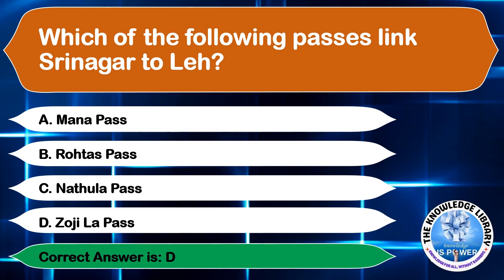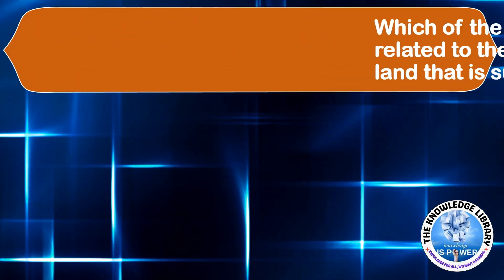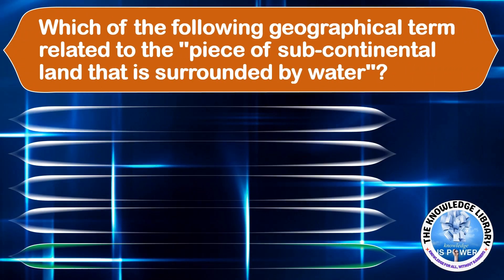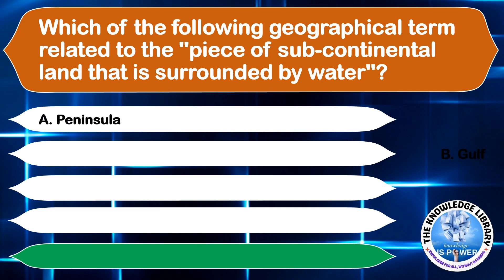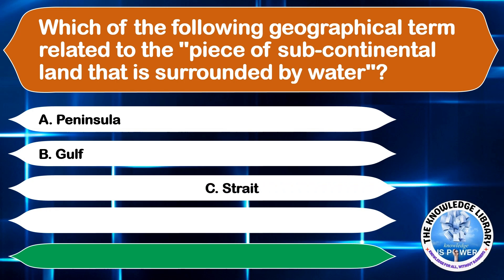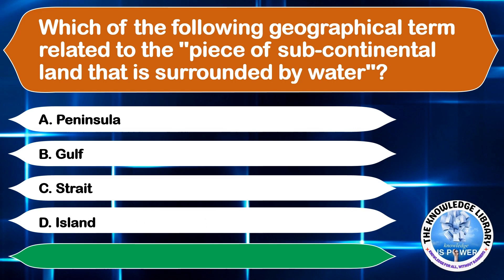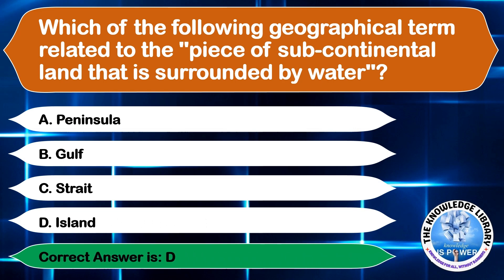Which of the following geographical terms is related to a piece of subcontinental land that is surrounded by water? A. Peninsula, B. Gulf, C. Strait, or D. Island. The correct answer is option D, Island.